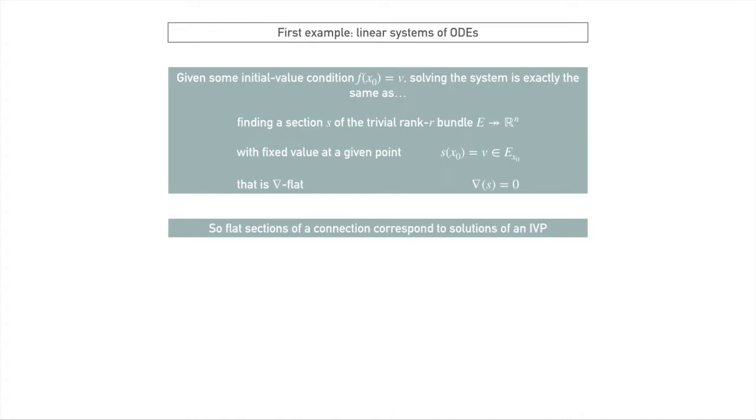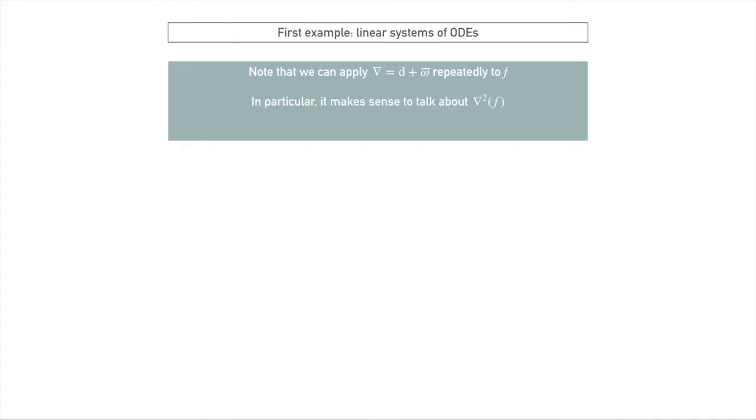Now, something we note is that we've defined our connection to be d plus omega bar. We can apply this repeatedly. Like this is just some operator we can apply to f, where f is f1, f2, it's a column vector. We could apply this lots of times. In particular, we could apply it twice. And we call this operator, given by applying the connection twice, we call this the curvature of the connection.